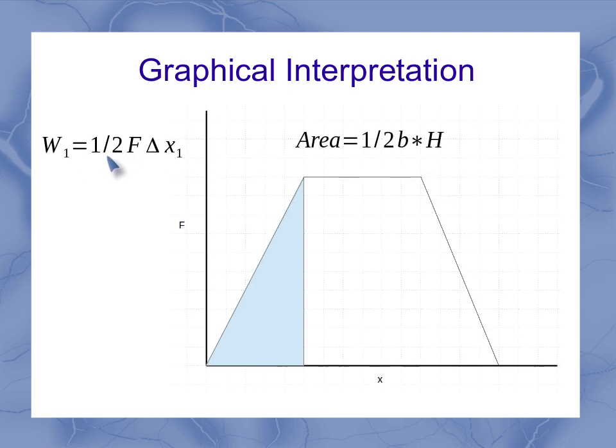In this particular case, that's 1 half. Now my base is my delta x, my height is my F. But I could also think of this 1 half F as being the average force over that particular displacement. So I've found the force and the displacement for this segment. I can find the work for that segment.